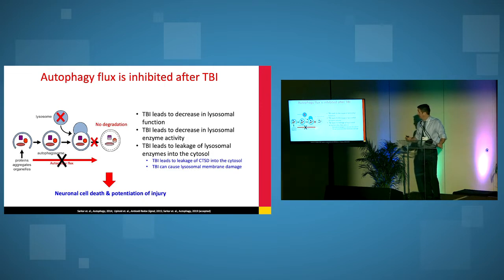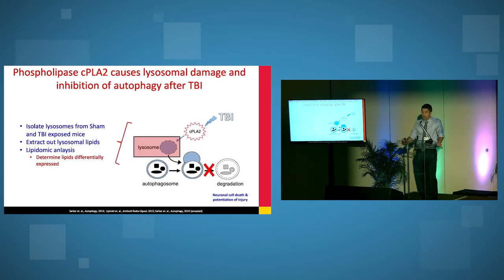And autophagy flux is inhibited after TBI. What is believed to happen, and there's a series of references that have talked about how disruption of the autophagy process is affected by TBI. The thought process or the idea is that the lysosomes, the membranes become disrupted, the lysosomes become leaky, which causes this autophagy flux to be disrupted. You get this buildup of the autophagosomes because the lysosomes are just not functioning properly, which can lead to neuronal cell death and potentiation of injury.